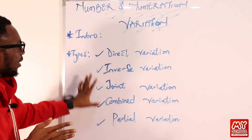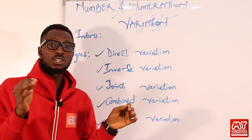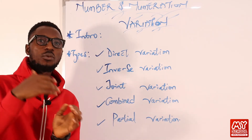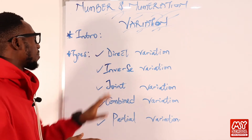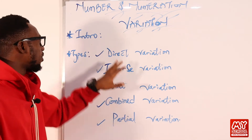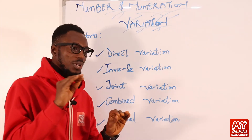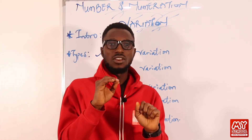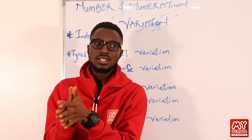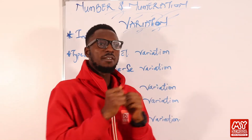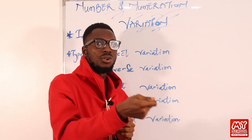Some presentations also mention quadratic variation, but we'll work with these five. In direct variation, you are showing the relationship between two quantities. As one quantity increases, the other should also increase.